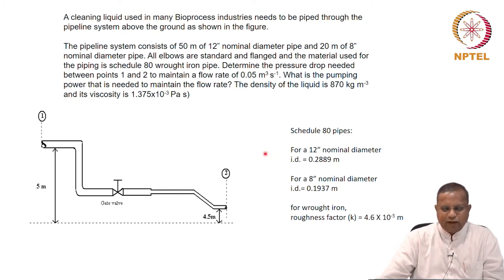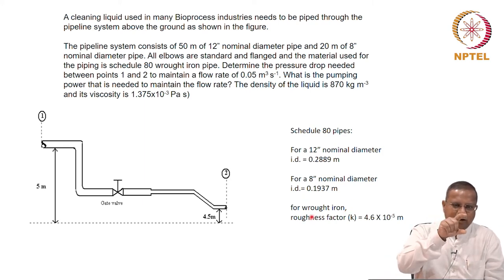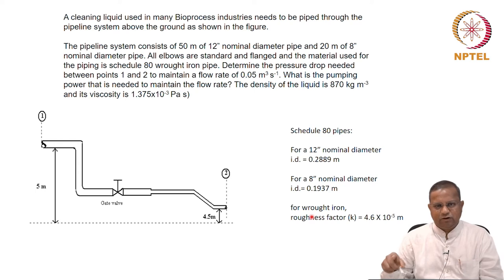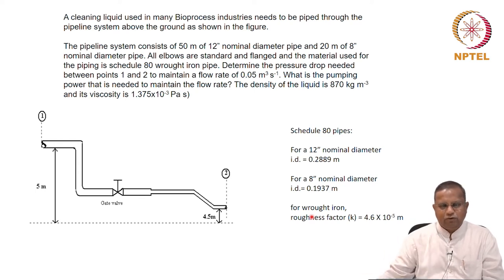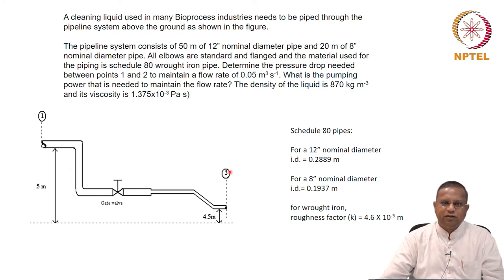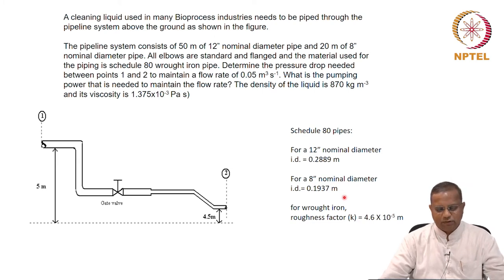Also, recall that if you want to find the friction factor from the Fanning friction factor chart — friction factor versus Reynolds number — you need to know the roughness factor. The roughness factor for a wrought iron pipe is typically 4.6 × 10⁻⁵ meters. So k/d is what you need to find the friction factor. That is the situation here, so let us go through it step by step.